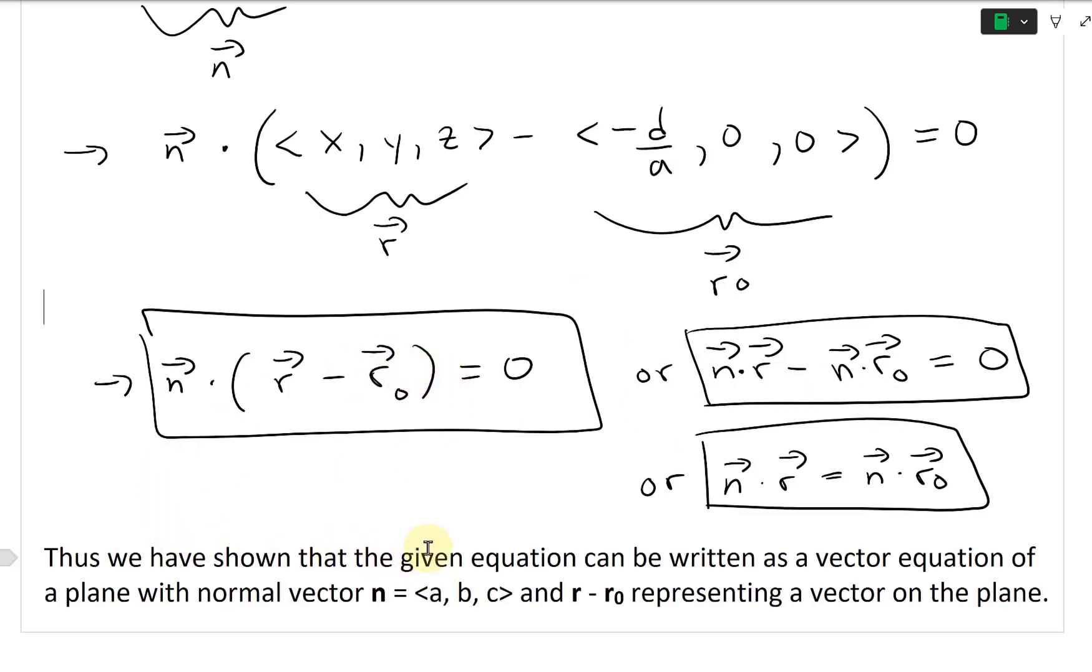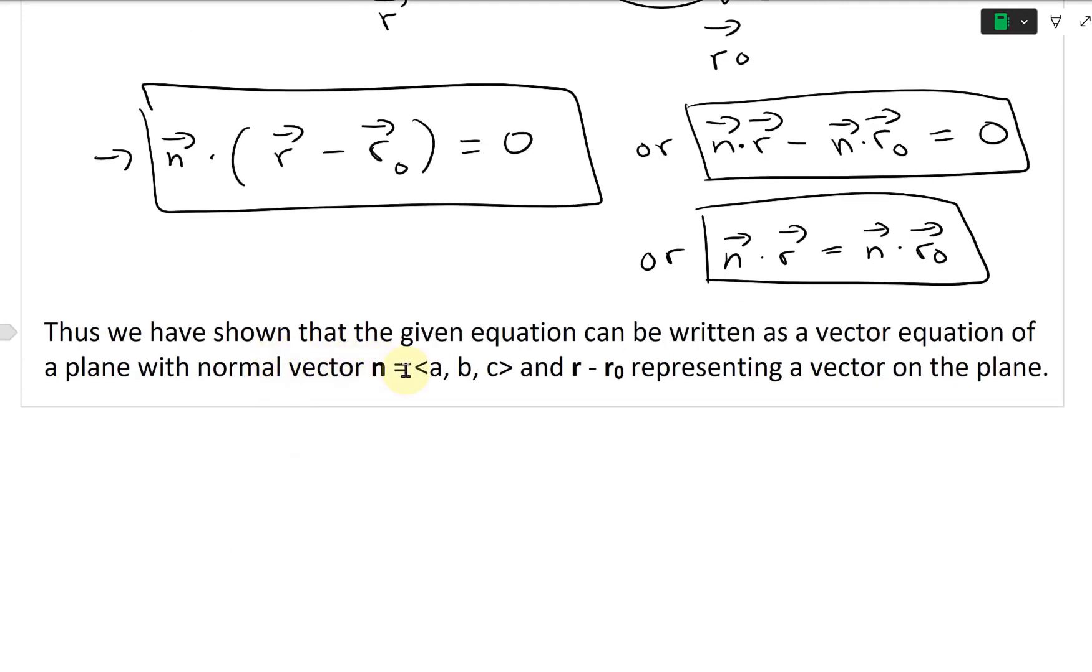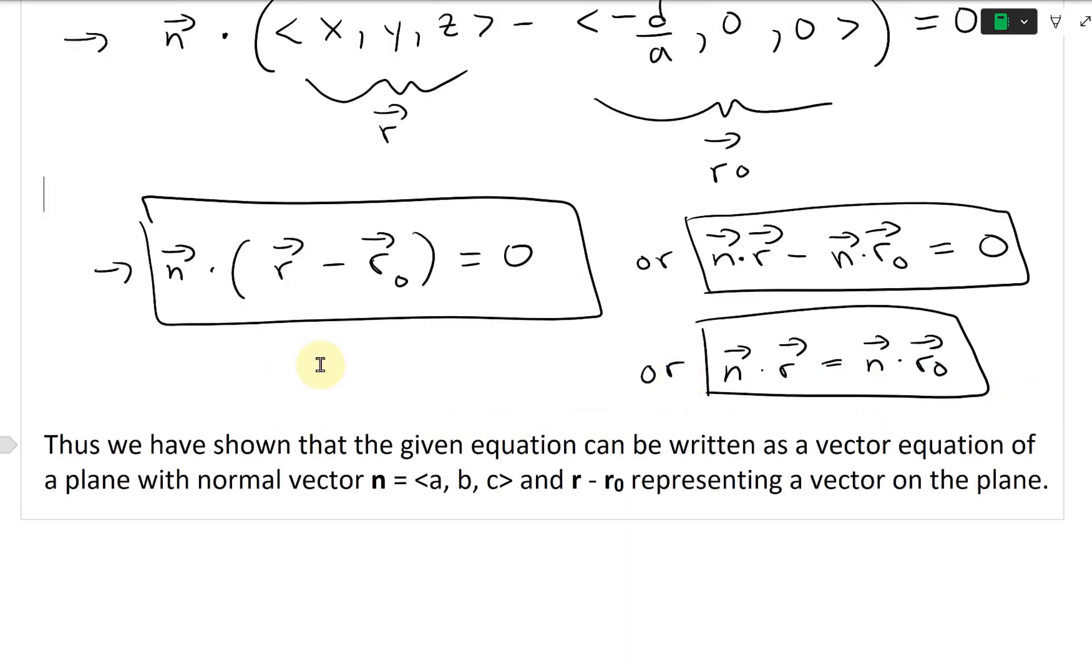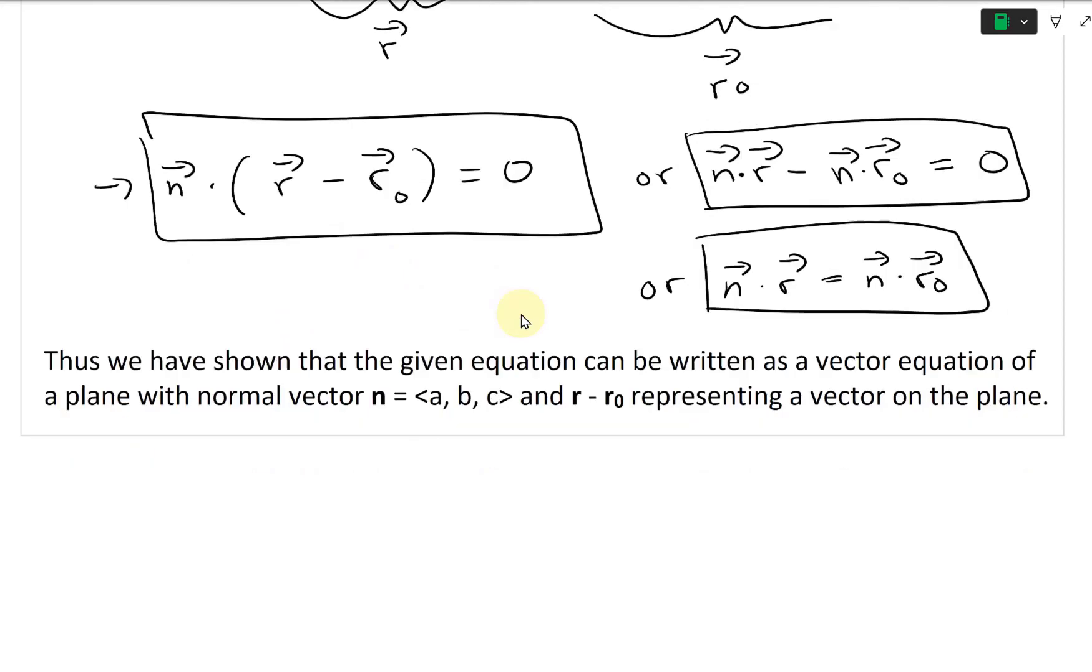Thus we have shown that the given equation can be written as a vector equation of a plane with normal vector n = <a, b, c> and r - r₀ representing a vector on the plane.